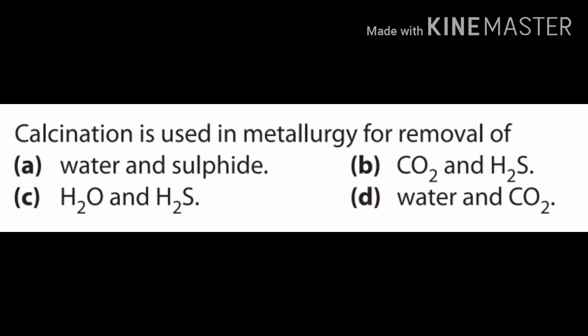Next question: calcination is used for metallurgy — during calcination what is removed? Options are: water and sulfide; CO₂ and H₂S; H₂O and H₂S; or water and CO₂. Calcination and roasting are two methods used for converting metal into its oxide ore — think carefully about what is removed during that process.